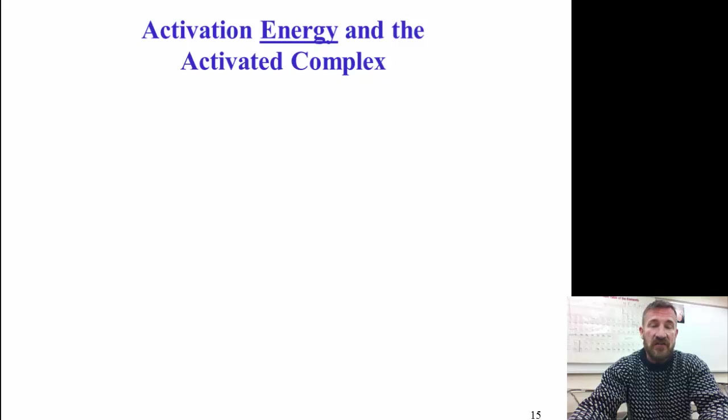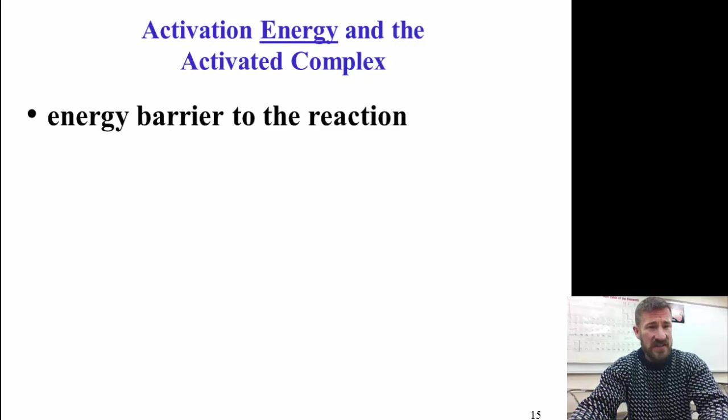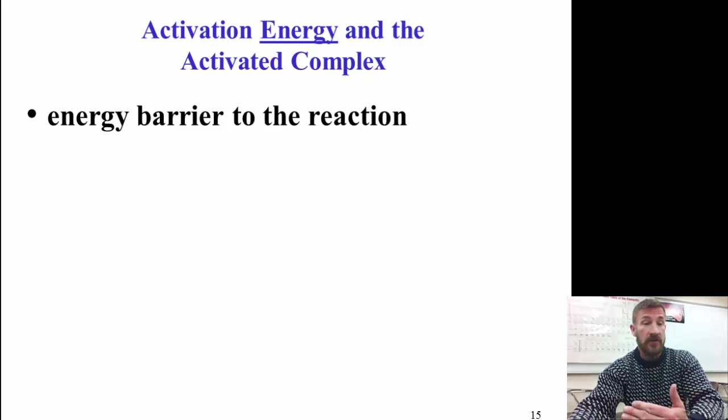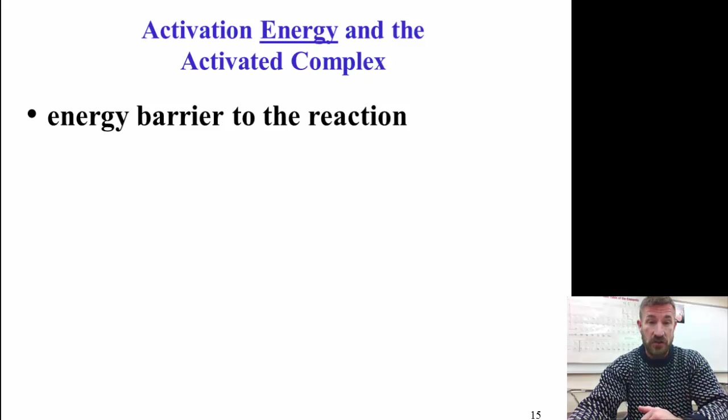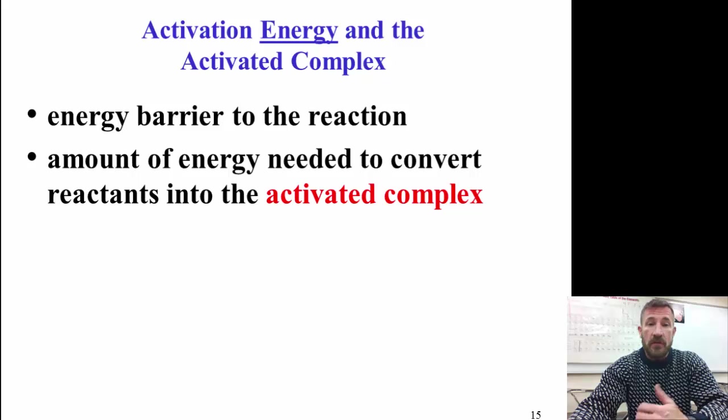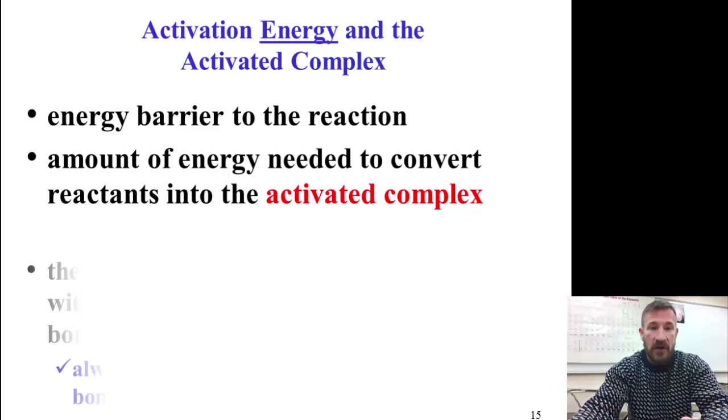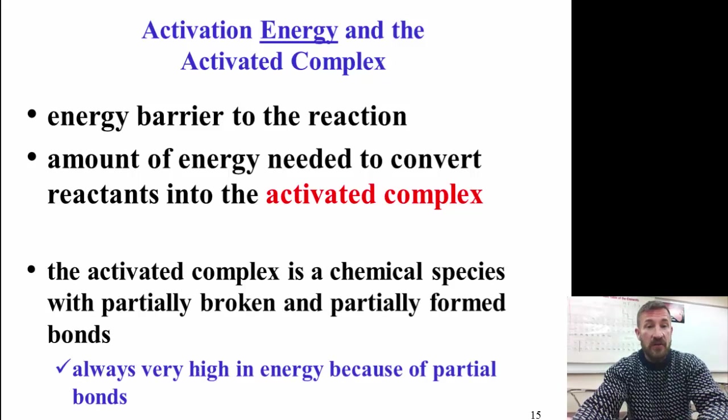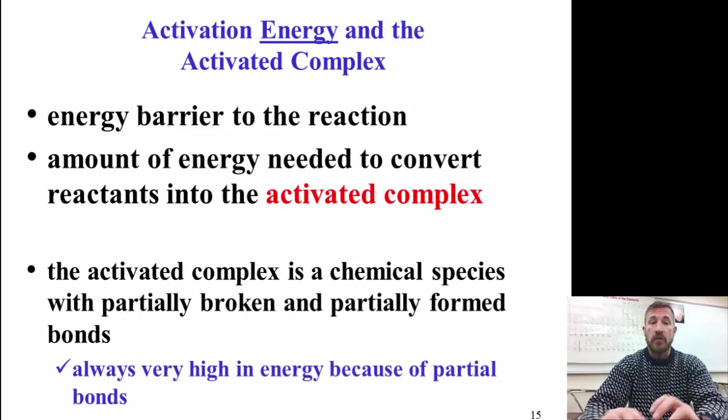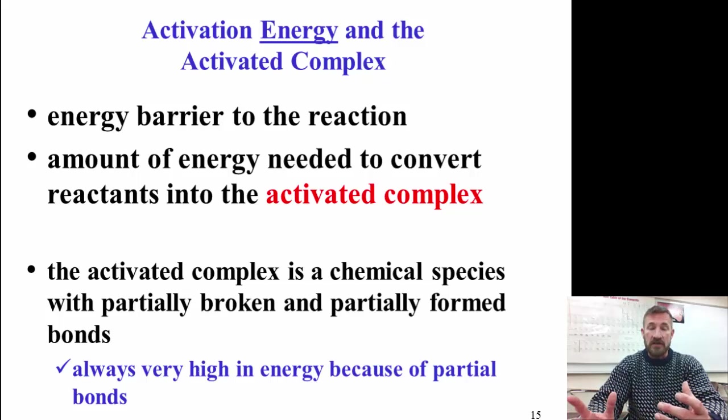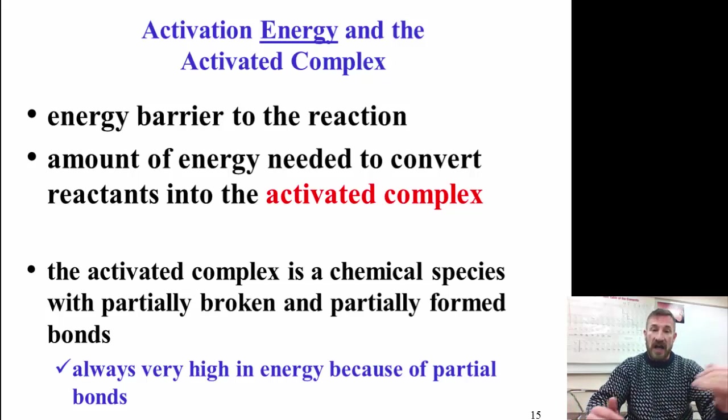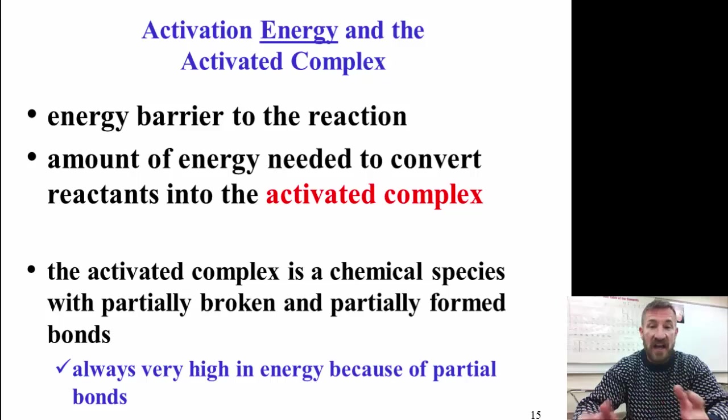And the other thing is you have an activated energy and an activated complex. So what is activated energy? It's the energy barrier that you have to overcome for any reaction to occur. So the amount of energy you need to go from reactants to the activated complex. Now the activated complex is just a chemical species with partially broken and partially formed bonds. That's what you have when you're going from reactants to products. It's always high energy, and it's because you have partial bonds.